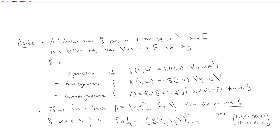The key part is that it's linear in each component. We say B is symmetric if B(v, w) equals B(w, v) for all v and w in V, and skew-symmetric if B(v, w) equals minus B(w, v). Note that skew symmetry and symmetry are the same thing in a characteristic two field. We say B is non-degenerate if the radical of B equals zero, meaning the only vector such that B(v, w) equals zero for all w is the zero vector.